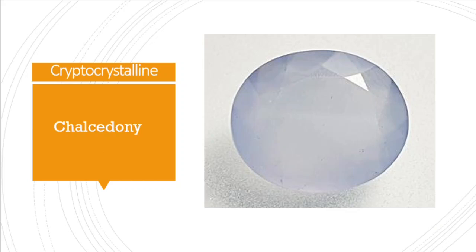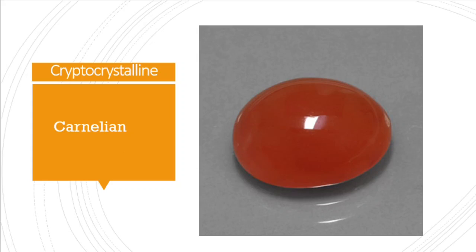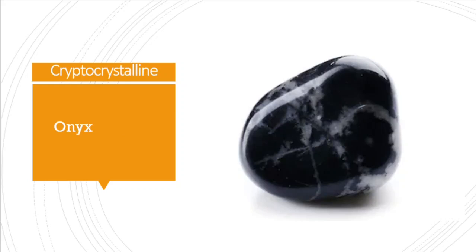Usually opaque green jasper with hematite inclusions provides the classic bloodstone appearance. Then chalcedony and chrome chalcedony, which has a greenish appearance compared with the previous case. Then carnelian quartz, a red color opaque gemstone. Then onyx, the black color gemstone variety with white color patches, as you can see here.